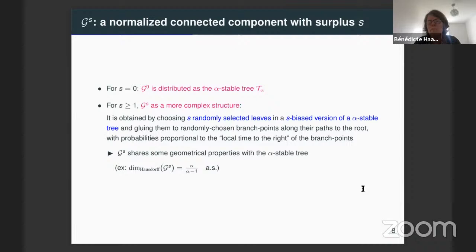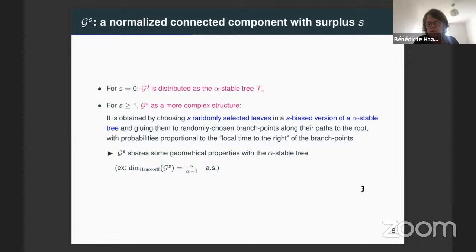When we have this biased version of the alpha-stable tree, we pick some leaves and glue them along their path to the root of the alpha-stable tree to get G_S. My goal is to present more clearly some properties of G_S. Let me say that since it is constructed from an absolutely continuous version of the alpha-stable tree, it has the same Hausdorff dimension, which is alpha over alpha minus one.